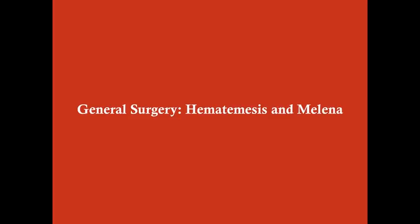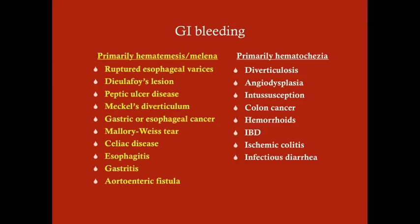We're going to talk about hematemesis and melena. There's a big differential for hematemesis and melena, as there is also for hematochezia. These aren't all-inclusive lists, but these are some of the most prominent things, as well as some of the most commonly tested things on Step 2 and 3. When we're thinking hematemesis and melena, we're thinking upper GI bleeds, stereotypically.